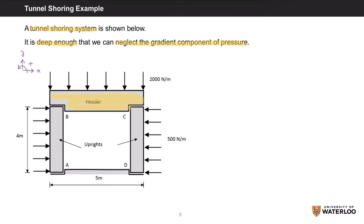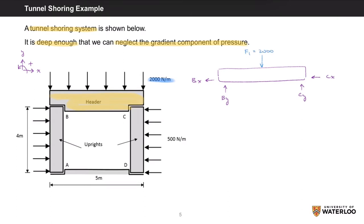For the header, we have BY, BX, CY, and CX, which come from the uprights. I'll draw BY and CY acting upwards, and BX and CX acting to the left. We also have the 2000 N/m distributed load, which I will convert into a concentrated point load called F1. F1 equals 2000 N/m times the 5-meter length of the header, giving a concentrated point load of 10 kN acting 2.5 meters from either end of the header.